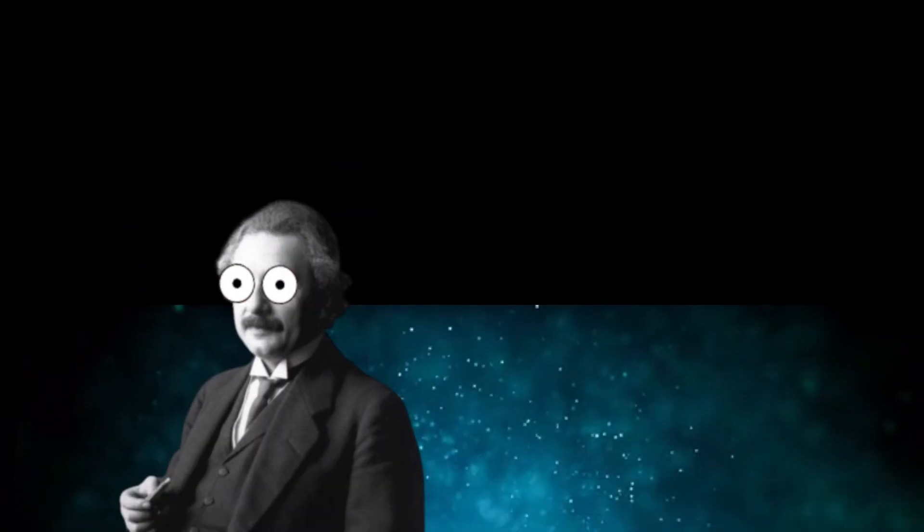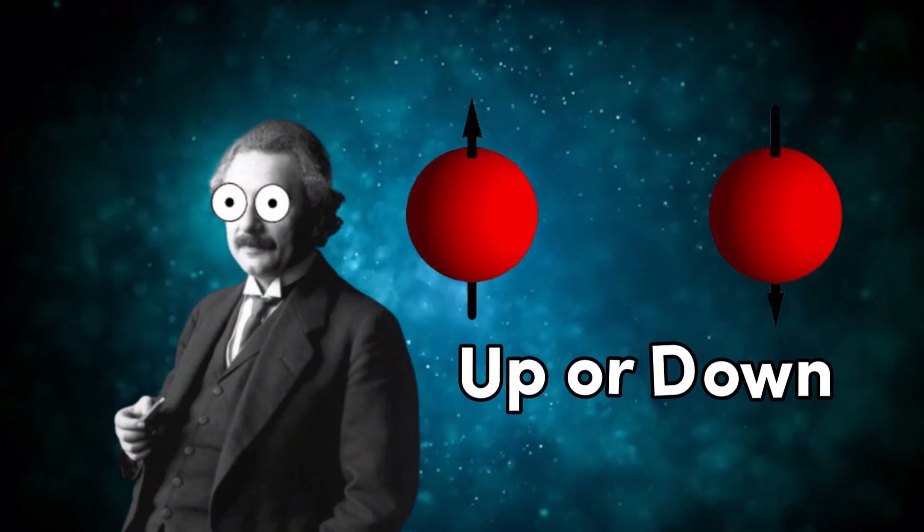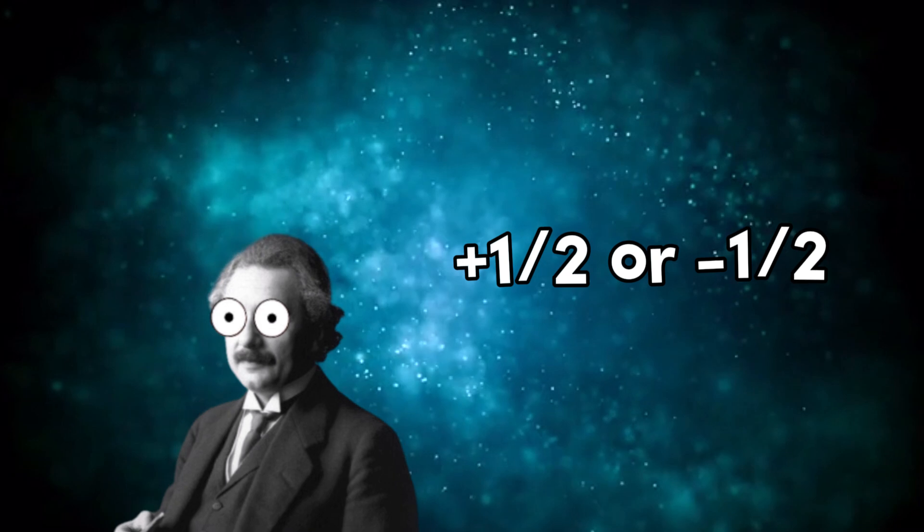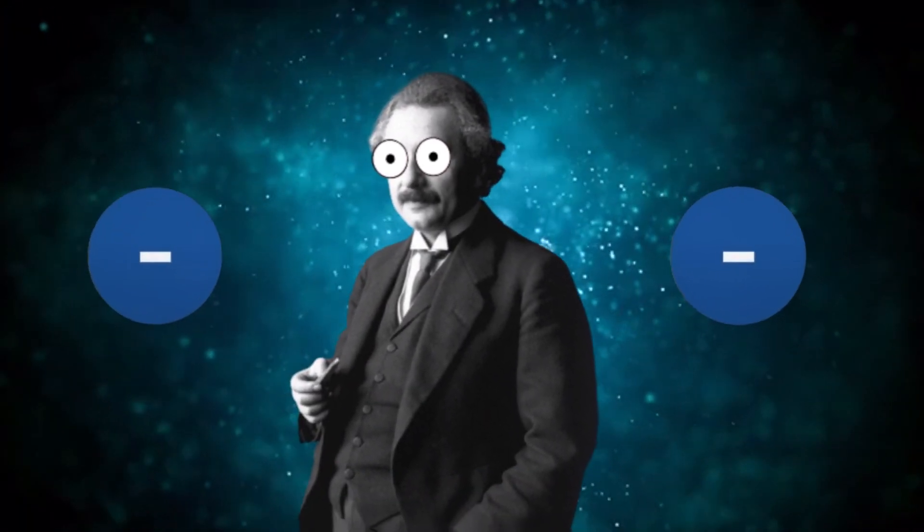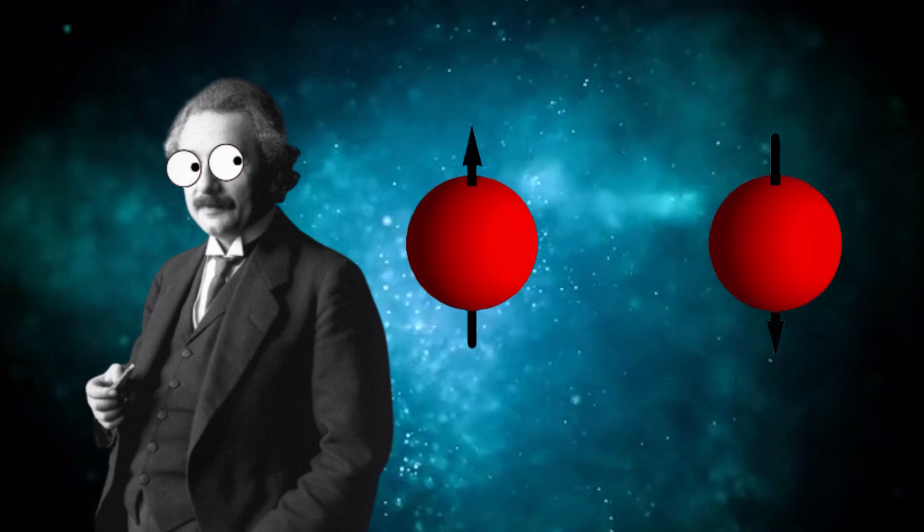The spin quantum state can be either spin up or spin down, which corresponds to a positive or negative half unit of spin. There can be a maximum of two electrons in an electron shell because there are only two possible spin states.